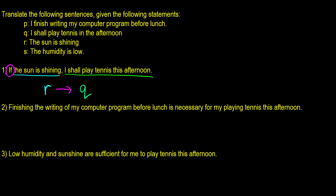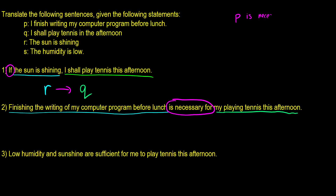The second sentence is: 'Finishing the writing of my computer program before lunch is necessary for my playing tennis this afternoon.' We have two statements: finishing the program before lunch (P), and playing tennis this afternoon (Q), with the connective 'is necessary for.' P is necessary for Q means Q arrow P. So if P is necessary for Q, the result is Q arrow P.